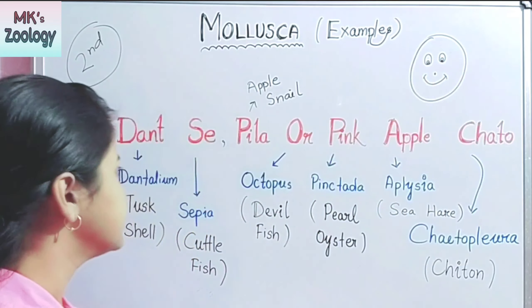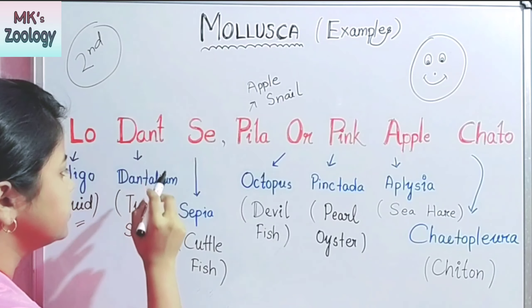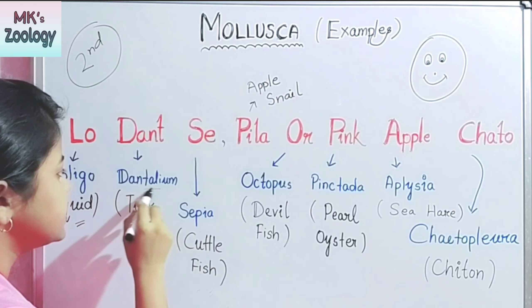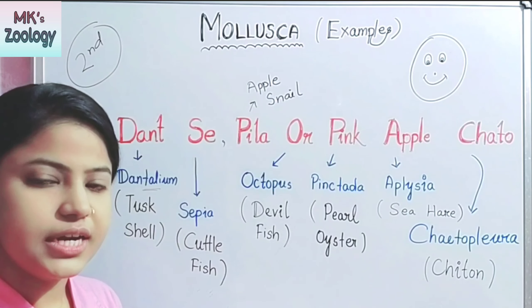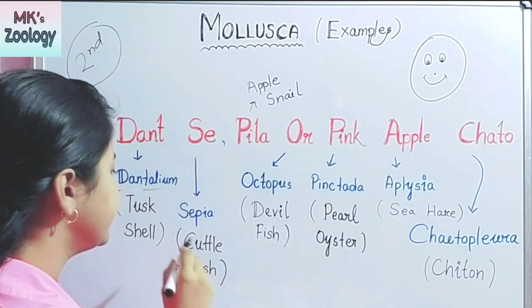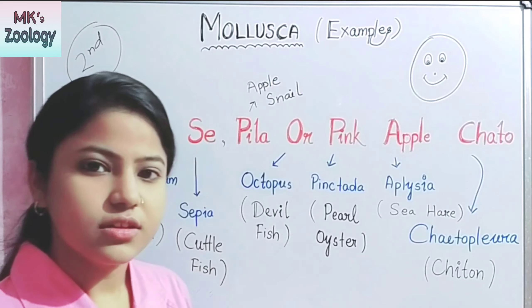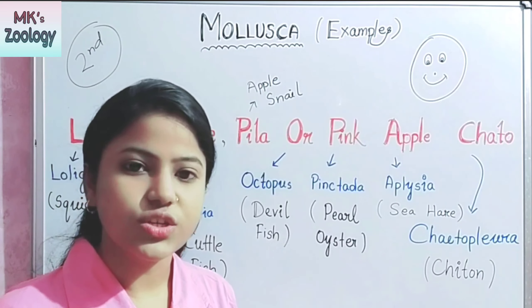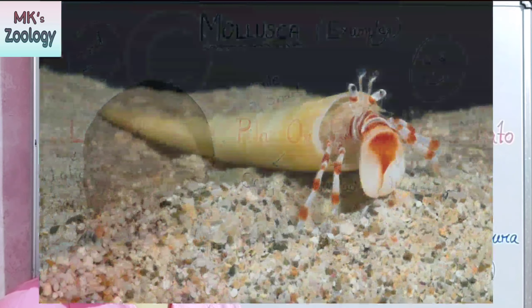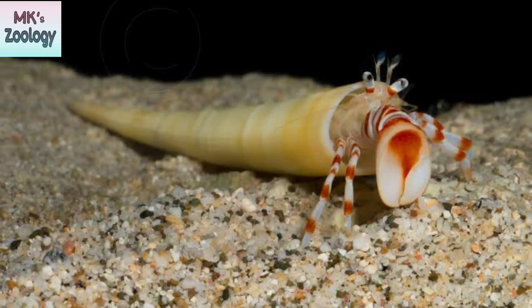The second letter, "Dat", stands for Dentalium. Dentalium is a species of phylum Mollusca. You can see the structure of Dentalium on screen — this is your Dentalium.